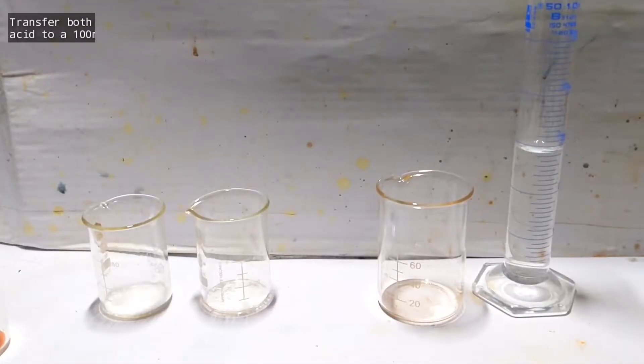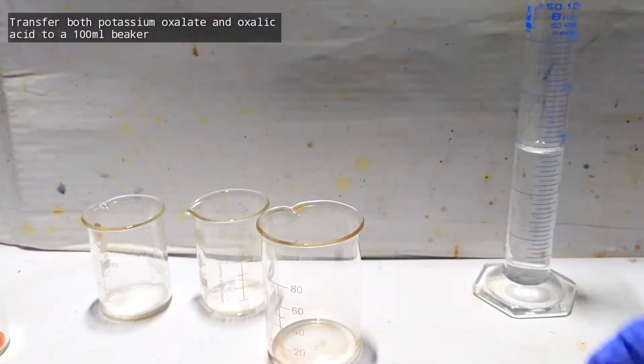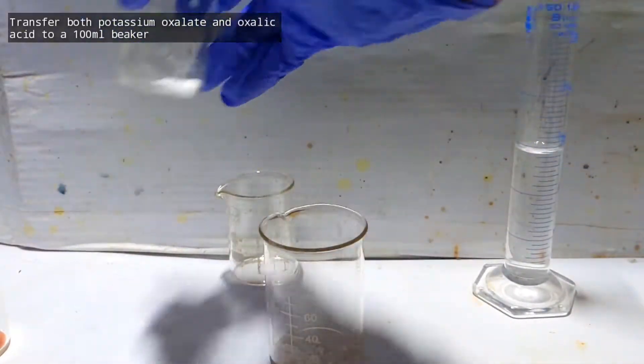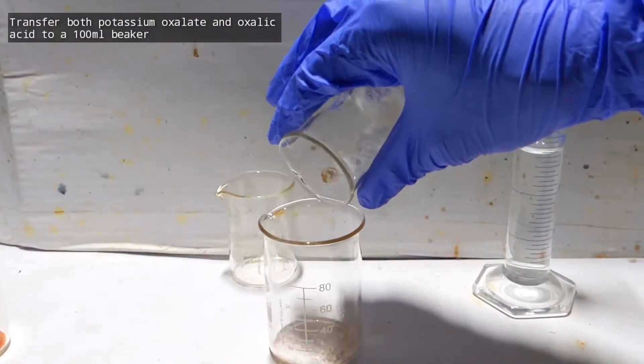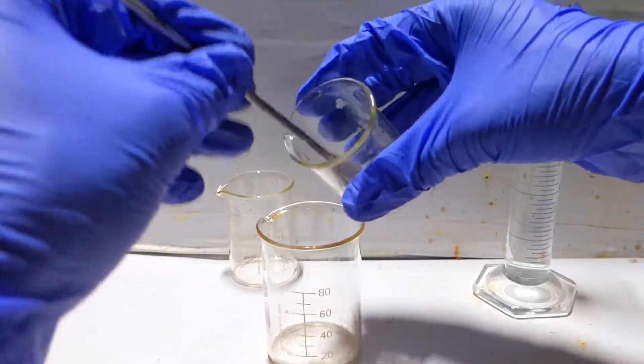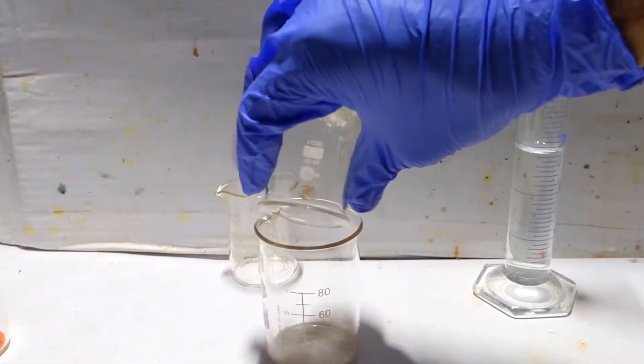Take a 100 milliliter beaker and transfer both the 1 gram potassium oxalate and 2.5 grams of oxalic acid to it. Oxalic acid got stuck on the walls of the beaker, so a spatula was used to transfer it completely.